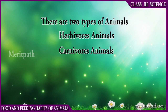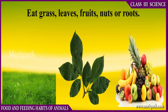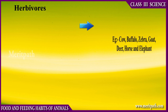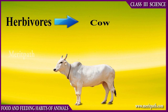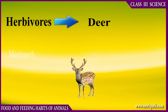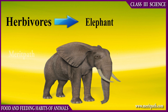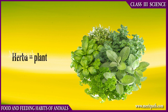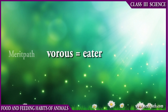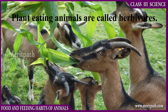Herbivorous animals are those animals which depend on plants for their food. For example, cow, buffalo, zebra, goat, deer, horse, and elephant. Herba means plant and voris means eater. Plant-eating animals are called herbivorous animals.